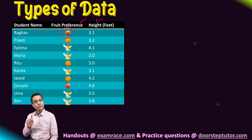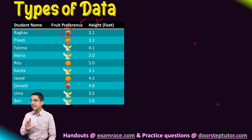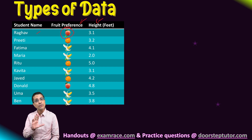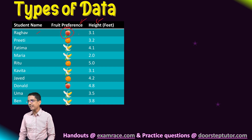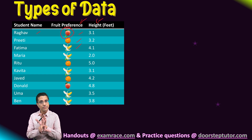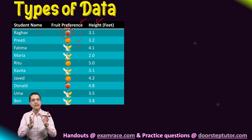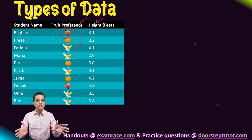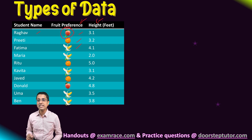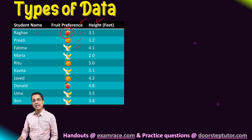The first is fruit preference, which can be only one of three types: either apple, orange, or banana. Such data which can be classified into one of a few types is known as categorical data.